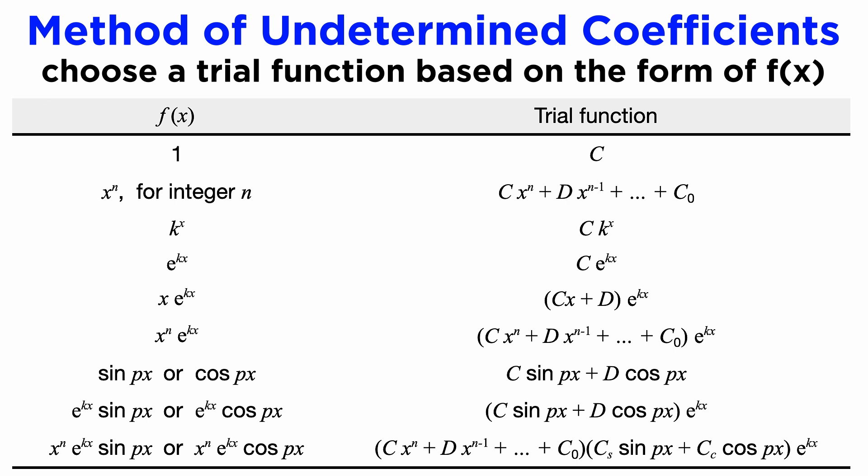In the method of undetermined coefficients, we choose a trial function that will become our particular integral based on what the right side of our DE, f, looks like. As this table shows, if f is a constant, our trial function will also be an undetermined constant. Exponential functions will stay exponentials, while trigonometric functions become a sum of sines and cosines, and polynomial functions become a polynomial of the same degree, all the way down to the constant term. Notice that the multiples of x inside the function, shown in this table as k for the exponentials and p for the trig functions, is always kept the same when writing the trial function.